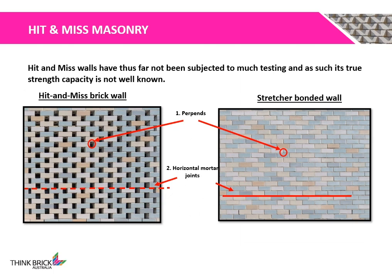Here we have a Hidden Mist Brick Wall on the left and a Stretcher Bonded Wall on the right. There are a couple of differences between the two walling systems. Firstly, there are no vertical perpen joints in the Hidden Mist Brick Wall, while in the Stretcher Bonded Wall the vertical joints are completely filled. Secondly, there is a void between the horizontal mortar joints in the Hidden Mist Brick Wall, while in the Stretcher Bonded Wall the horizontal mortar joints are completely filled. As a result, modifications must be made to the calculations stated in AS3700.